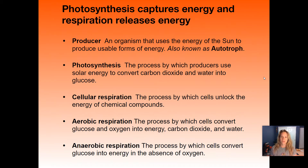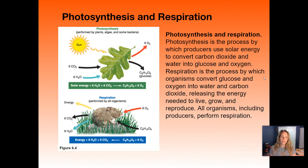Photosynthesis is capturing energy from the sun and forming glucose, which all organisms that are not producers use. Cellular respiration is also a review from Bio — that's how organisms, whether producers or consumers, use those chemical compounds. Aerobic means with oxygen; anaerobic means without. Our cells go through both. Looking at this diagram, we've got a producer utilizing energy from the sun, converting carbon dioxide and water into oxygen as a byproduct and making glucose.